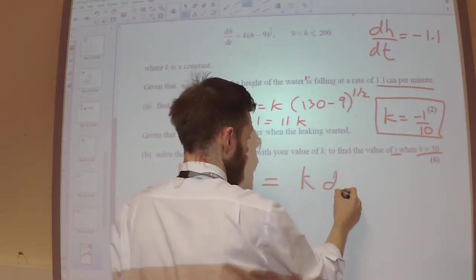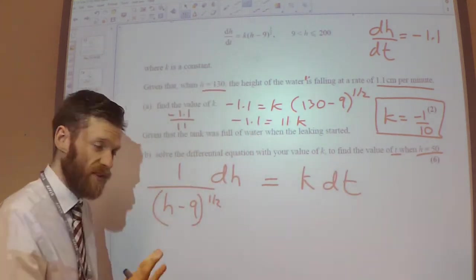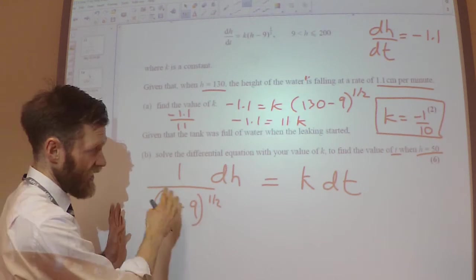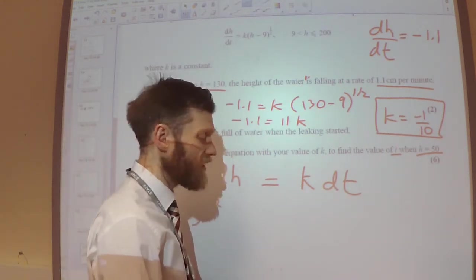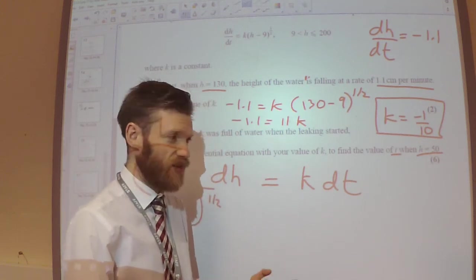So I would have K DT. So I've separated the variables, everything with a H here, everything with a T over here.